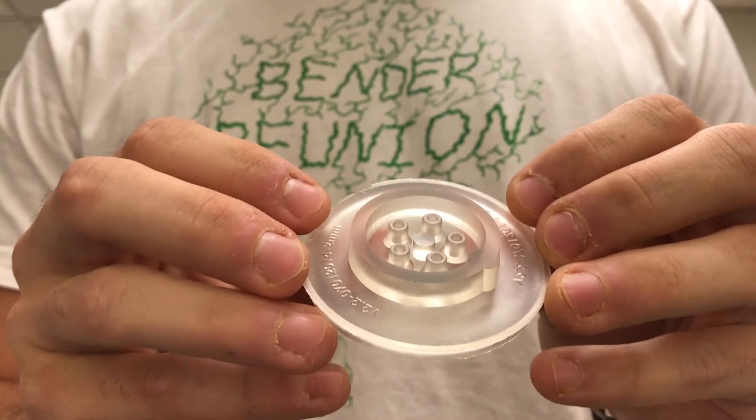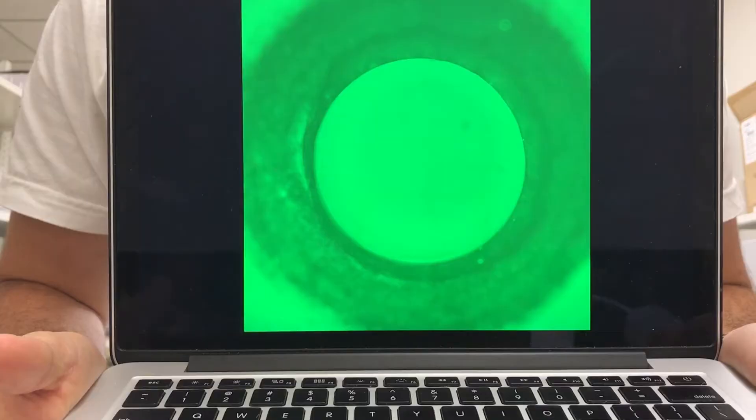My project specifically is taking beating cardiomyocytes that look like this and putting them into 3D microtissue molds that look like this to form tissue rings that can even beat like this.